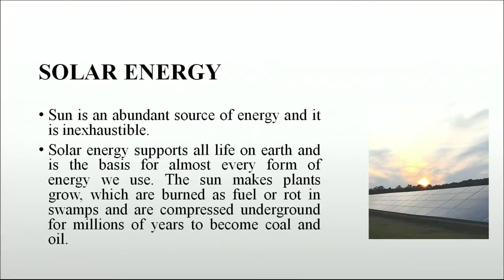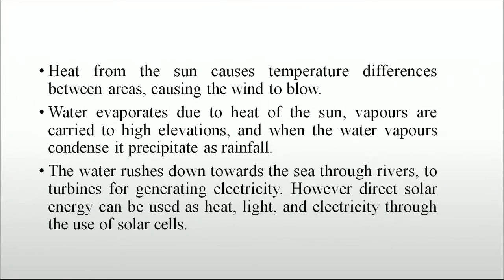Solar energy supports all life on earth and is the basis for almost every form of energy we use. The sun makes plants grow, which are burned as fuel or rot in swamps and are compressed underground for millions of years to become coal and oil. Heat from the sun causes temperature differences between areas, causing the wind to flow. Water evaporates due to the heat of the sun, vapors are carried to high elevations, and when they condense, they precipitate as rainfall, then rush down through rivers to turbines for generating electricity.